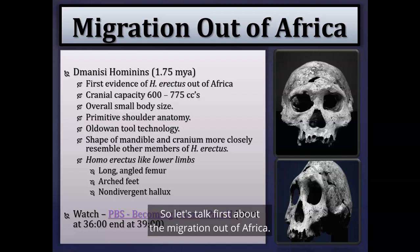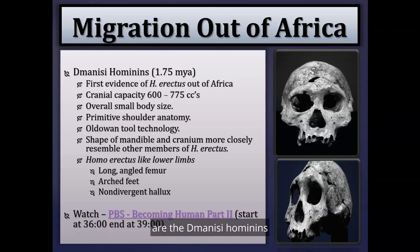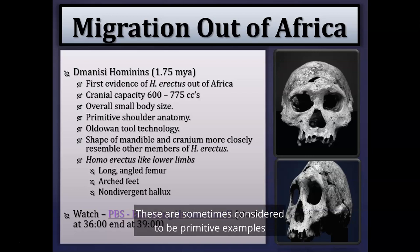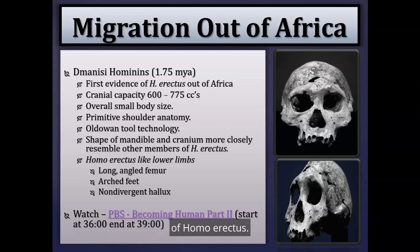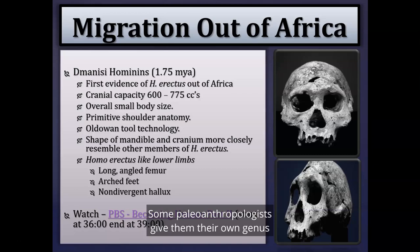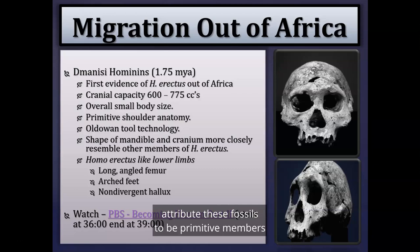The first fossil hominins we see out of Africa are the Dmanisi hominins, dating to about 1.75 million years ago. These are sometimes considered to be primitive examples of Homo erectus. Some paleoanthropologists give them their own genus and species, but most attribute these fossils to be primitive members of Homo erectus.